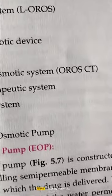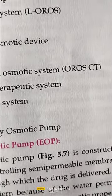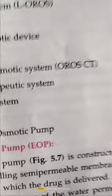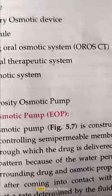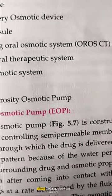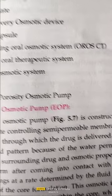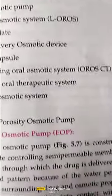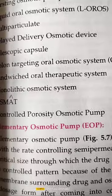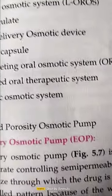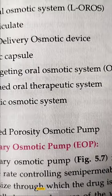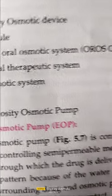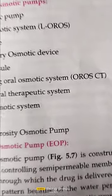Today's topic is implantable drug delivery system classification. In that classification, the second type is the oral osmotic drug delivery system. The oral osmotic pump is divided into three categories: single chamber, multi-chamber, and specific type of the osmotic pump.